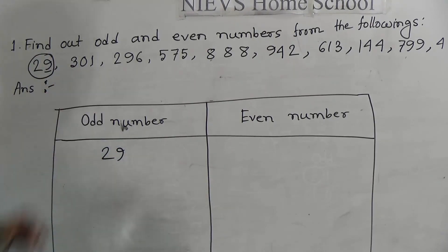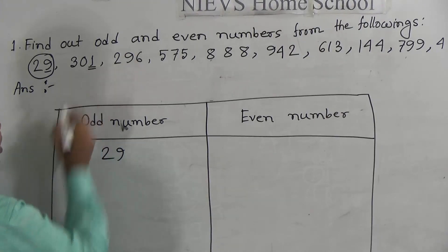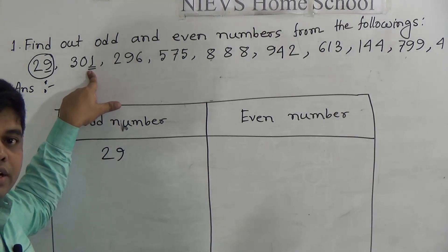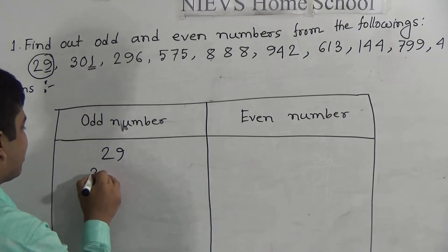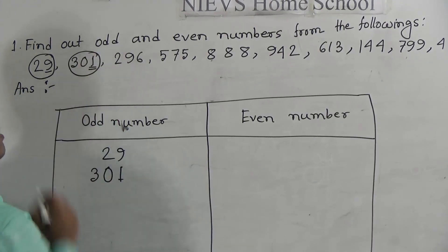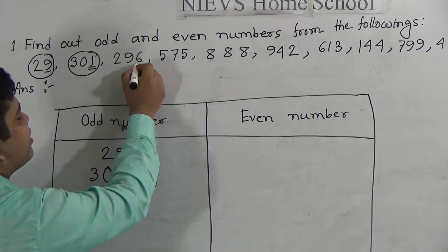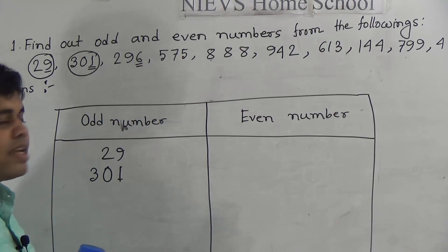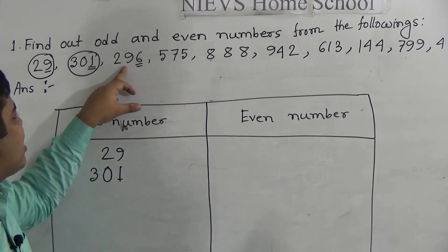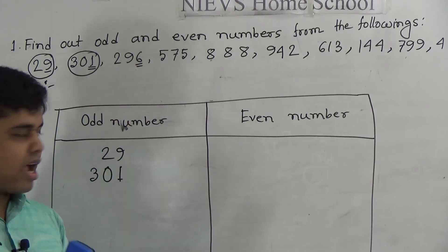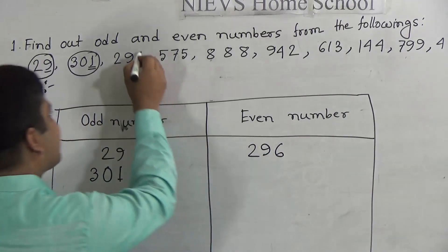301 — last digit is 1, which is odd, so 301 is an odd number. Write 301 in the odd number box. Next, 296 — last digit is 6, which is even, so 296 is even. Write 296 in the even number box. Next, 575 — last digit is 5, which is odd, so 575 is an odd number. Write 575 in the odd box. Next, 888 — last digit is 8, which is even, so 888 is even. Write 888 in the even number box.